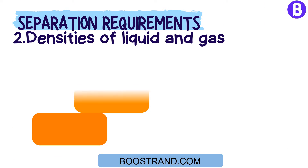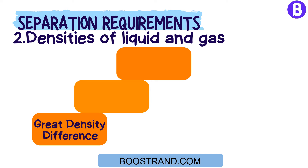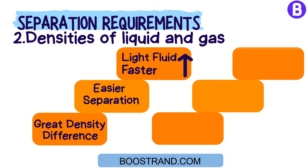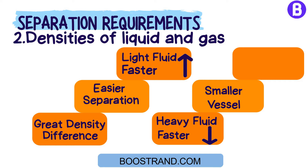When we have a great density difference between the phases to be separated, this means that separation will be easier. This is because the light fluid shall go upwards faster and the lower liquid shall settle faster. In this case, we shall need a vessel with a smaller diameter, which means less cost.